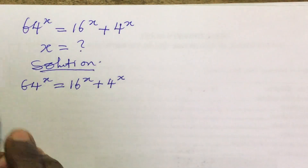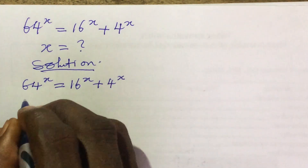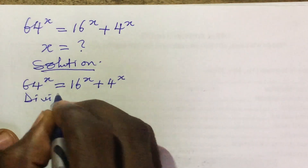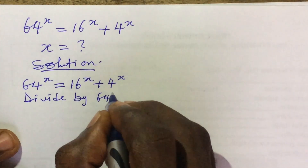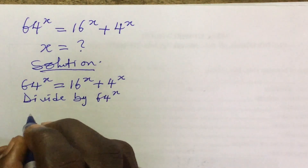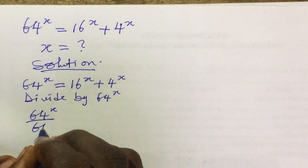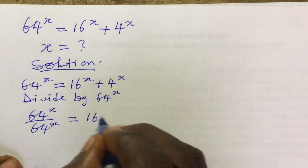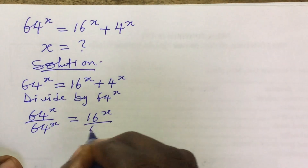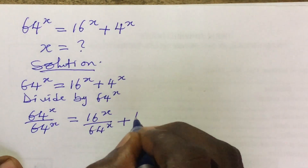From here I want to divide through by 64 to the power of x. So if we do that, we're going to have 64 to the power of x all over 64 to the power of x, equal to 16 to the power of x all over 64 to the power of x, then plus 4 to the power of x all over 64 to the power of x.